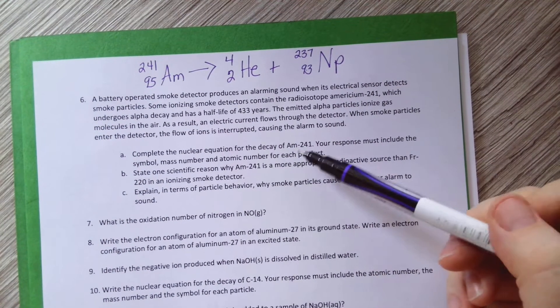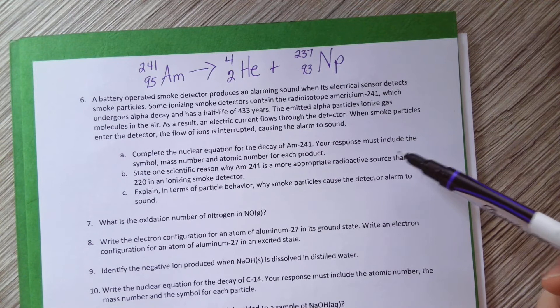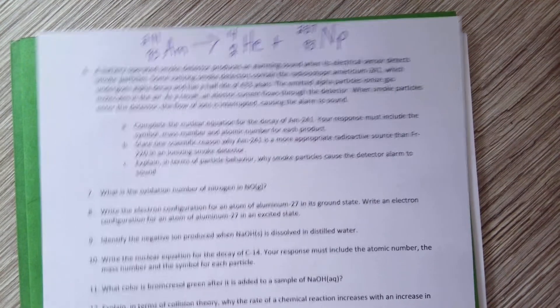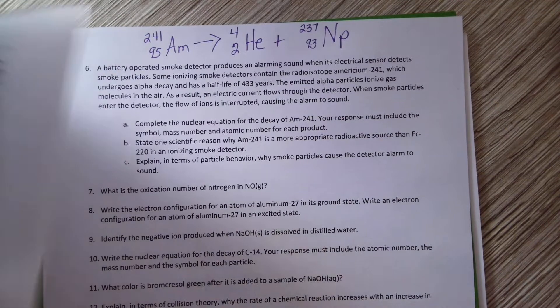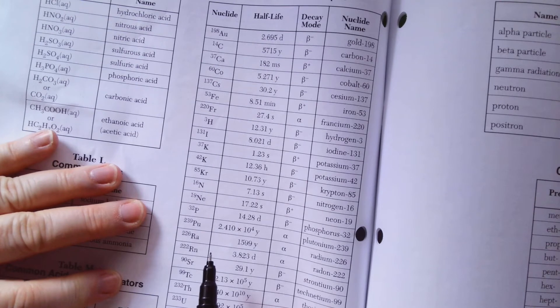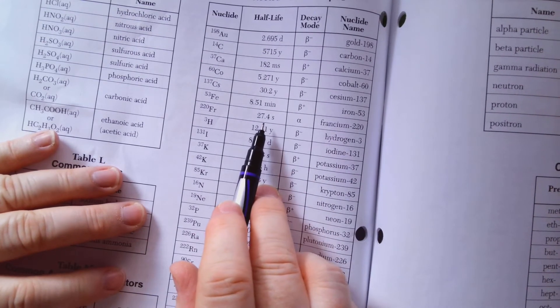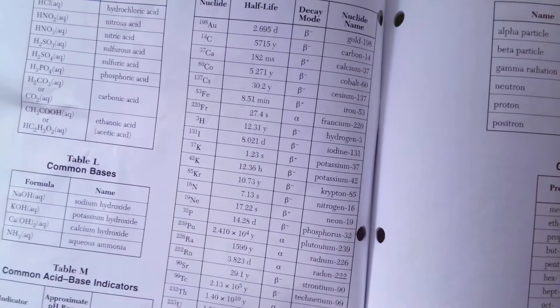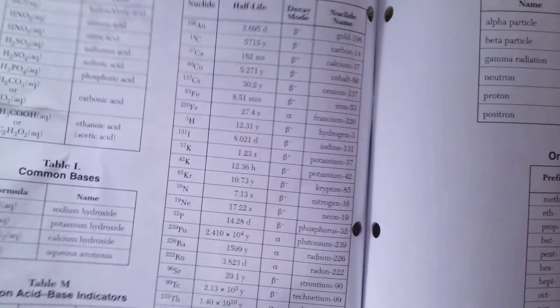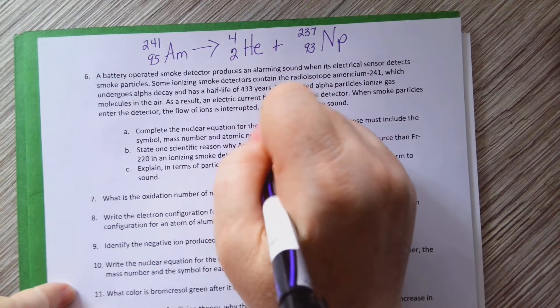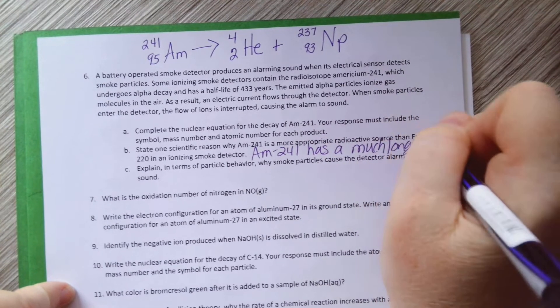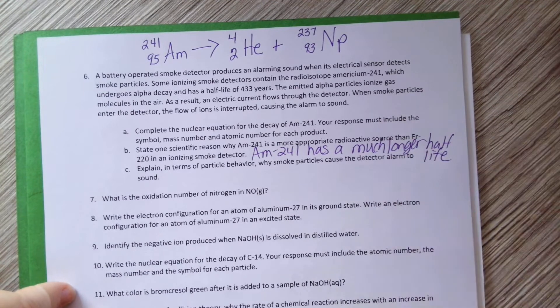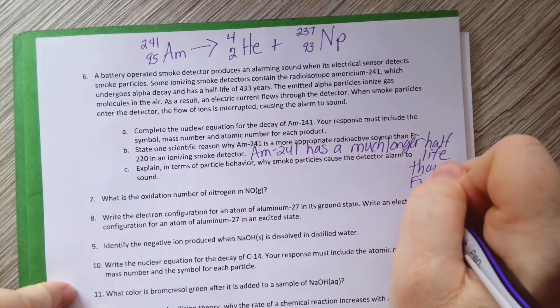State one scientific reason why Am-241 is a more appropriate radioactive source than francium-220 in a smoke detector. Well, what's the decay of this one? 433 years. So let's look up francium-220. Where is it? Up here. Oh my goodness, it has a half-life of 27.4 seconds. That would not last in a smoke detector at all. That is a terrible choice. So why is it a better choice? Am-241 has a much longer half-life, right? So it's going to last much longer than francium-220.